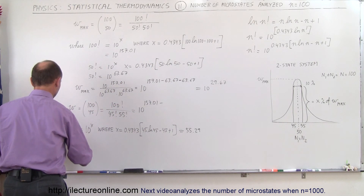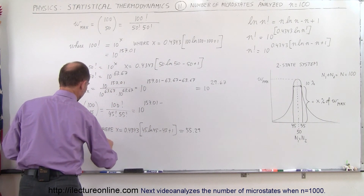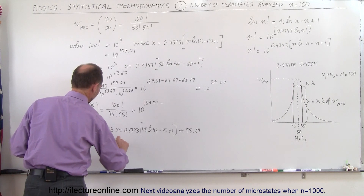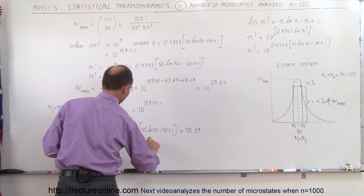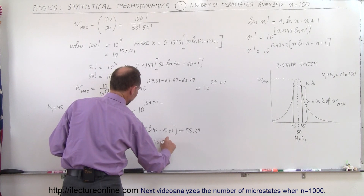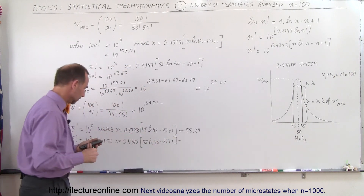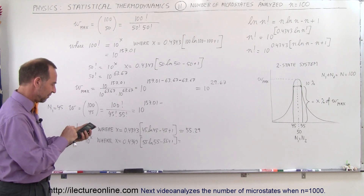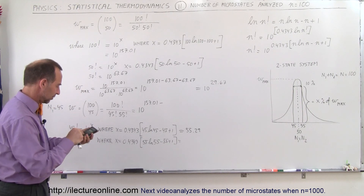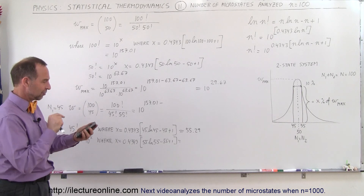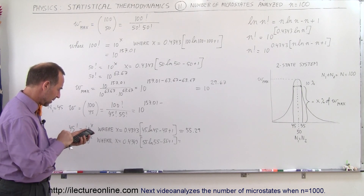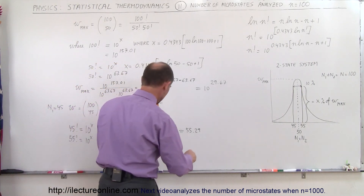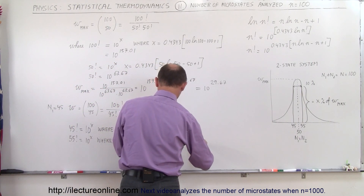For 55 factorial, x equals 0.4343 times 55 times the natural log of 55 minus 55 plus 1. Taking the natural log of 55, multiplying by 55, subtracting 54, then multiplying by 0.4343, gives the exponent 72.27. So 55 factorial equals 10 to the 72.27 power.